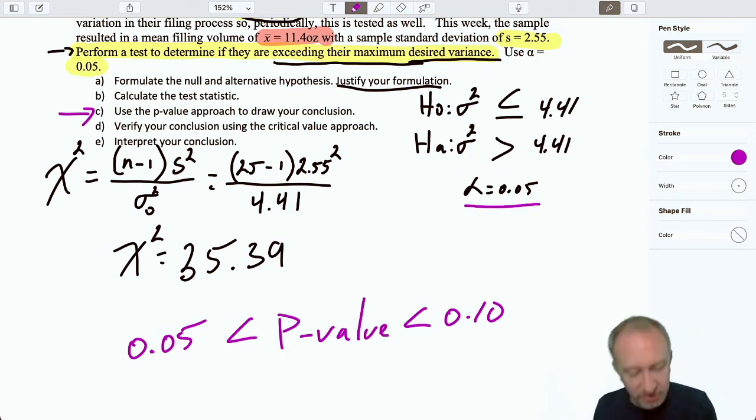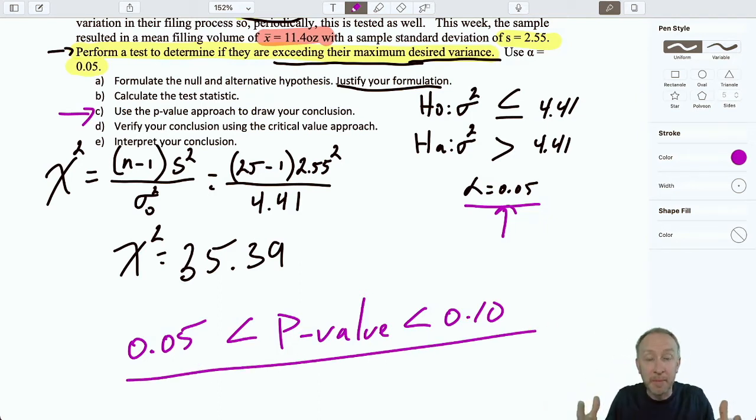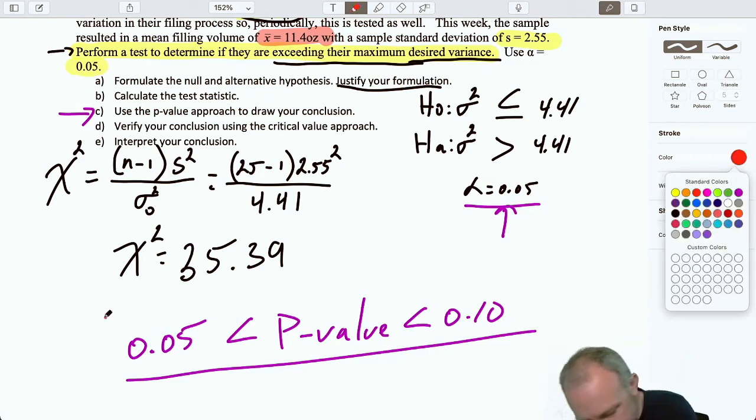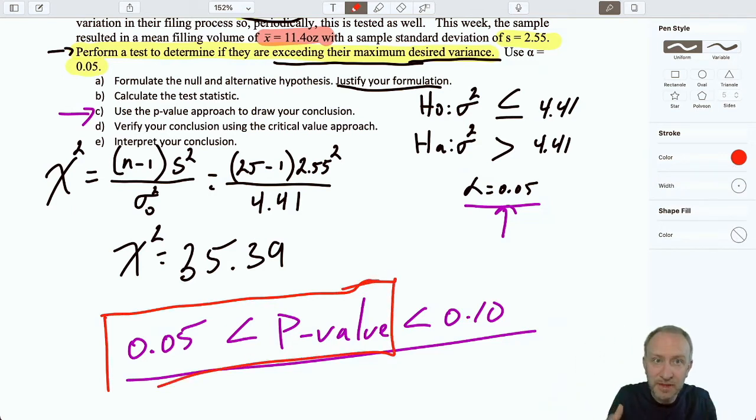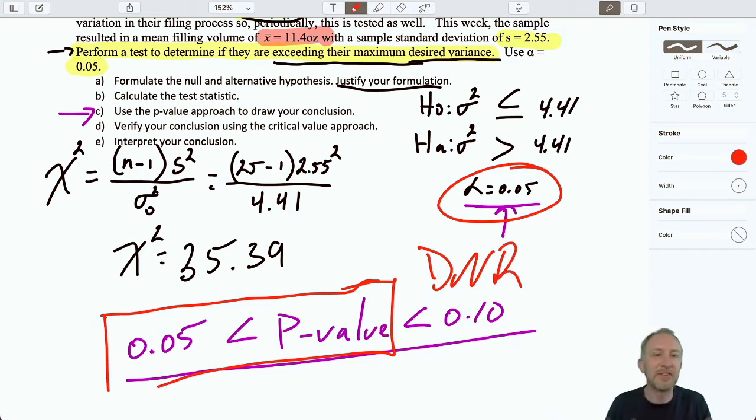Here we are for our p-value approach. We're doing this test at the 0.05 level of significance. The rejection rules are the same. The concept here is the same. That level of significance is telling me my level of comfort in committing a type 1 error, in falsely rejecting a true null hypothesis. This p-value is telling me my actual exposure to committing a type 1 error. Meaning that if the null is true, and if I choose to reject it, well, my exposure here to a type 1 error is greater than the level of exposure that I'm comfortable with. My exposure to a type 1 error here is greater than what I'm comfortable with. We have insufficient evidence to reject the null hypothesis.